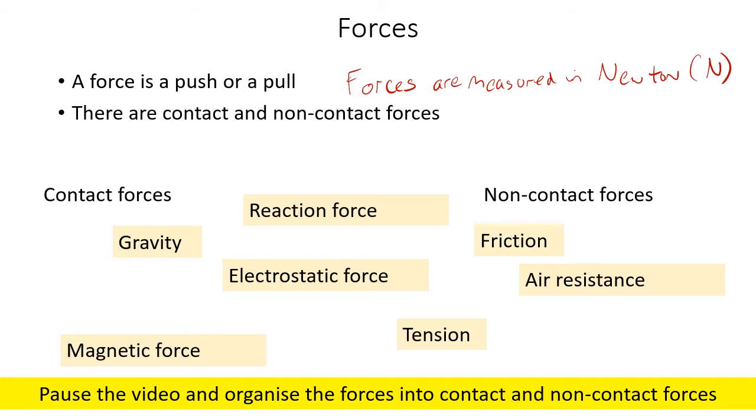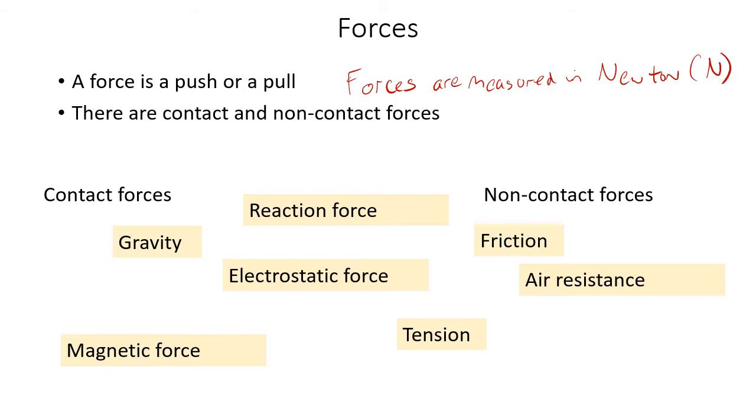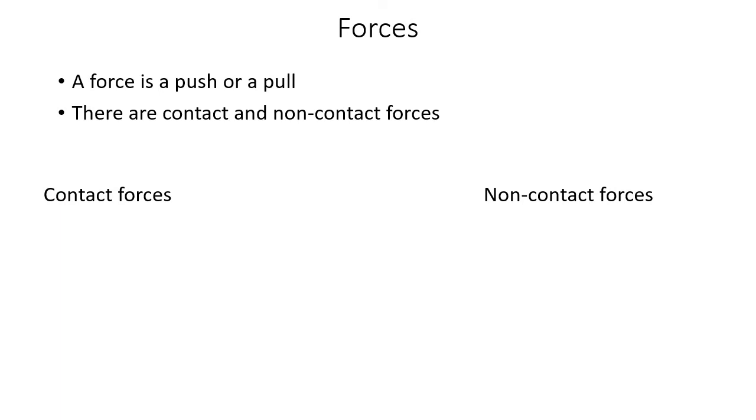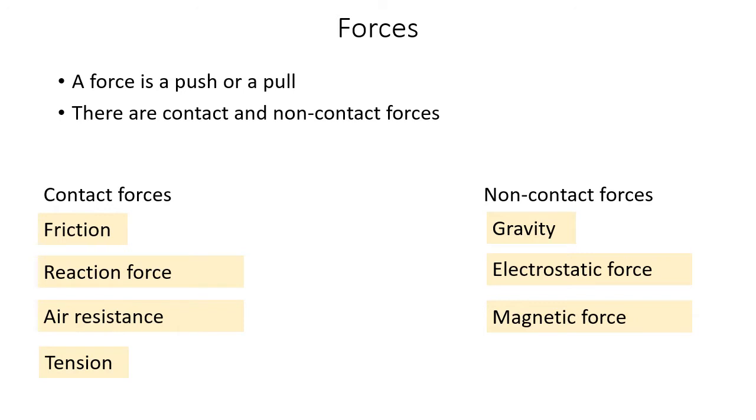And you should have now completed the task. We're going to have a look at how they are arranged. So our contact forces are friction, the reaction force, air resistance and tension. Our non-contact forces are gravity, the electrostatic force and the magnetic force. Well done if you've got those all right.